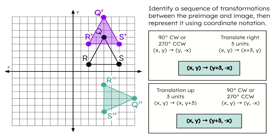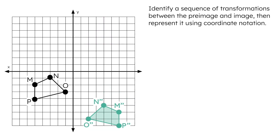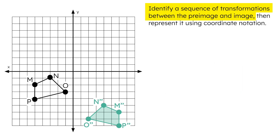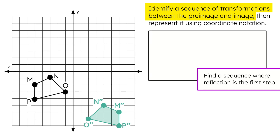I think you're ready to try one on your own. Comparing the pre-image and image, we can see that the orientation changed — the sides and vertices are arranged differently. Did the pre-image reflect or rotate? Looking closer, we can see that the image is a flipped version of the pre-image, meaning there must be a reflection in the sequence. Go ahead and identify a sequence of transformations between the pre-image and image where reflection is the first step. Use the spaces provided in your guided notes and the coordinate plane. Pause now and come back once you're done.